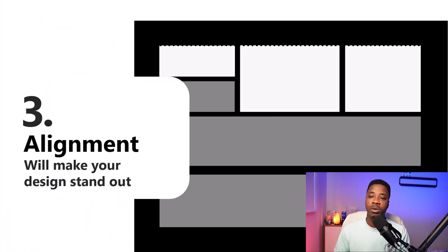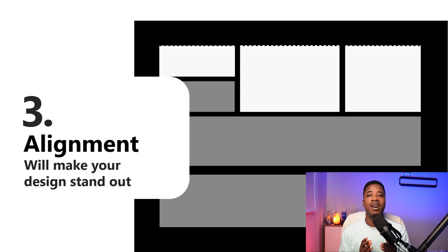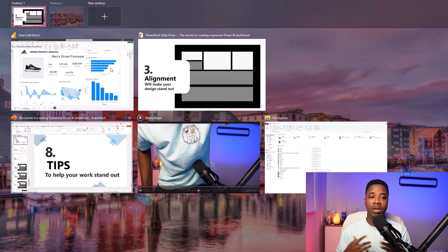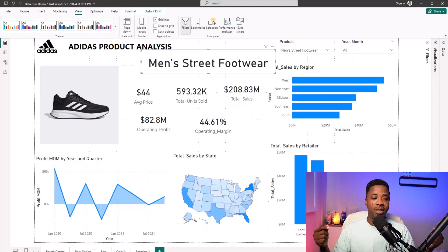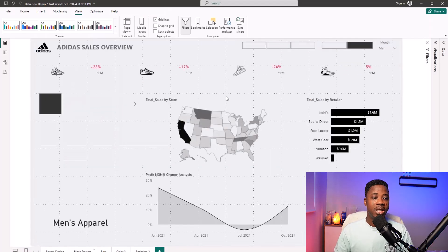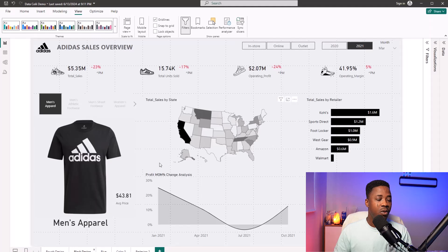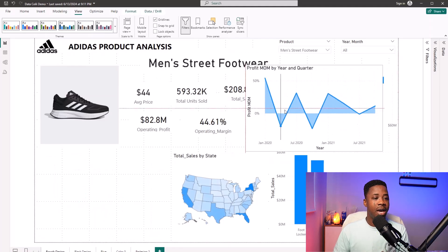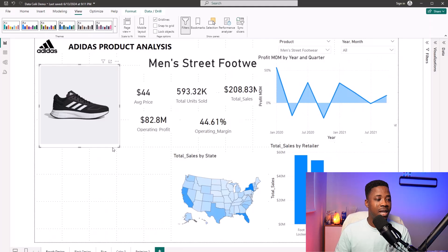The next thing you should always do is alignment — alignment will make your work stand out. Always align your visuals. Most people just dump their visuals on their dashboard without aligning them, and this can make your visuals look non-professional. So let's look at alignment. If you look at our target dashboard, it's very well aligned — we have the charts here, the picture here, and the numbers at the top.